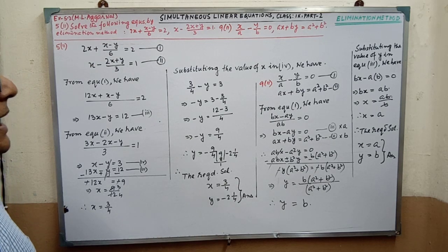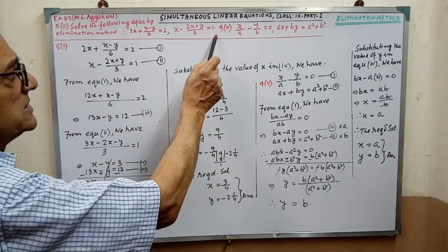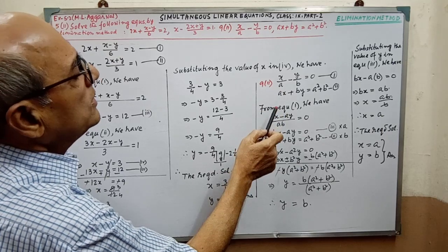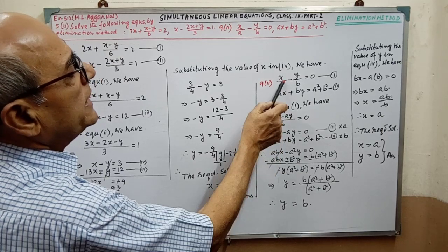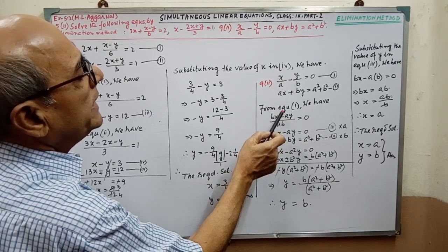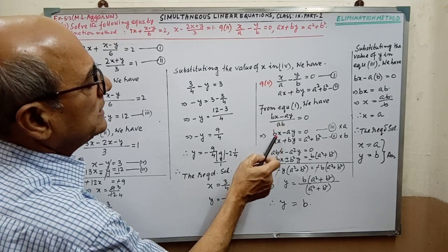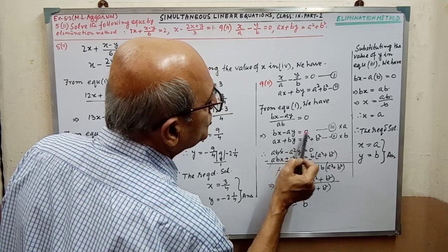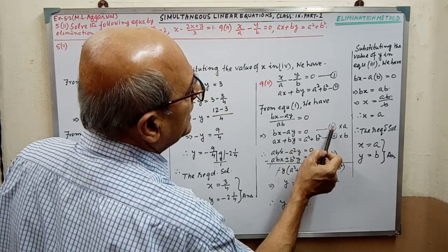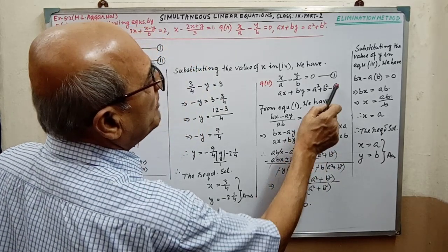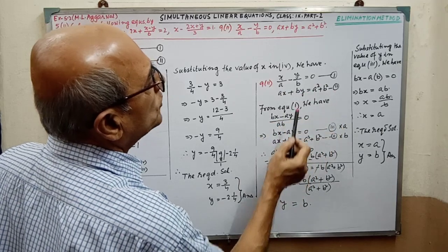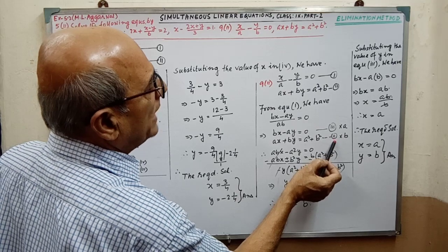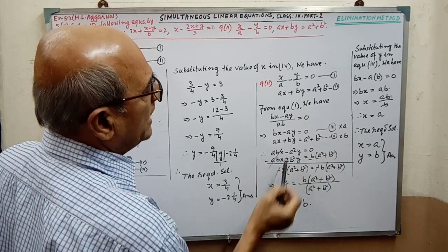And another sum — this sum. In this case, the same thing: we have to simplify the equations. From equation 1, by simplification, we are getting bx minus y equal to 0. You have to give the name — that is Part 3. And Part 1 is already in simplified form, so no need of simplifying more. After getting Part 3, we have to write Part 3 in this way.